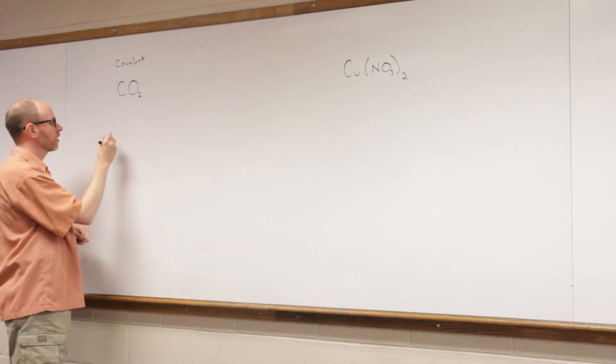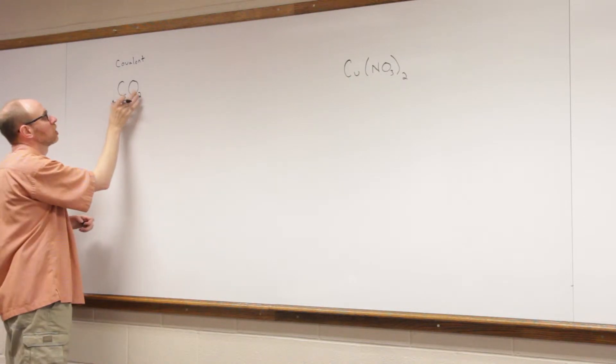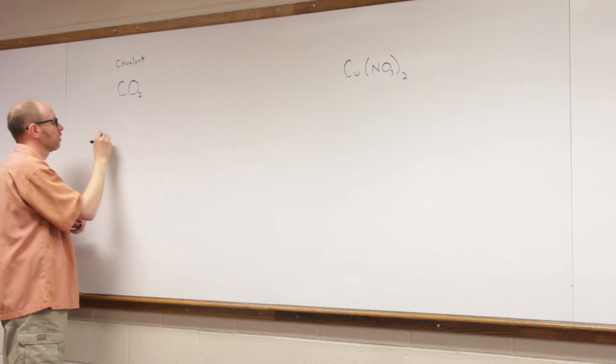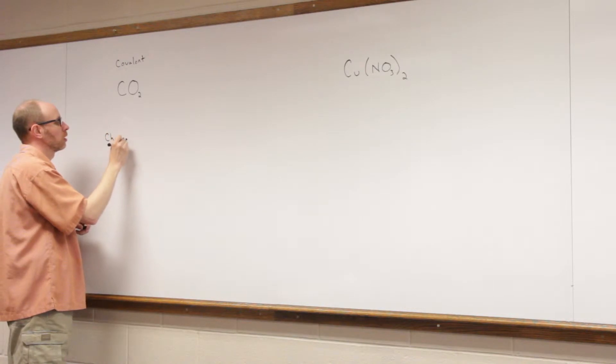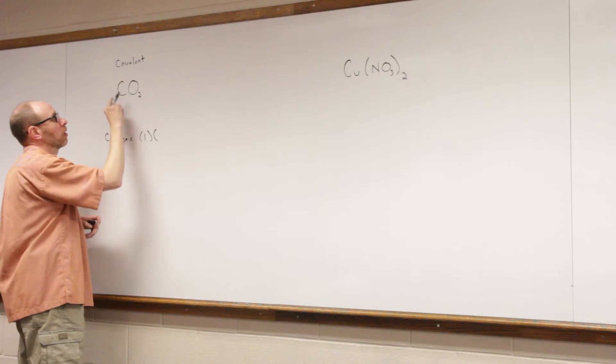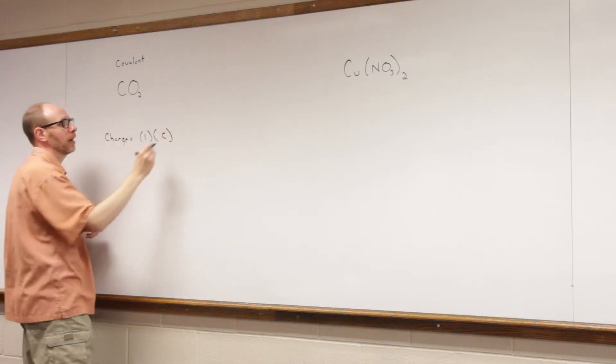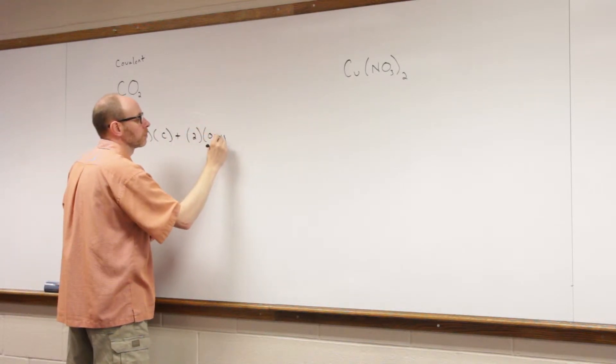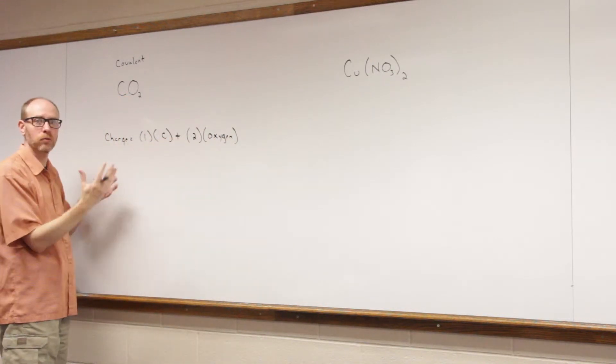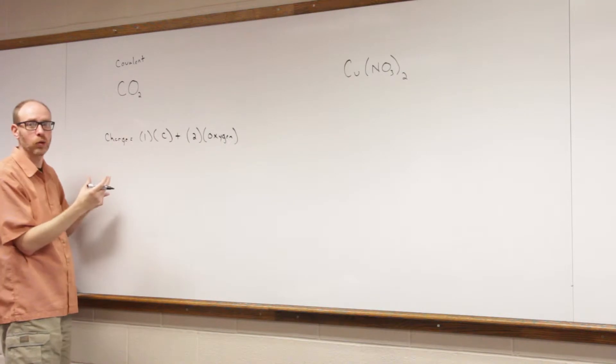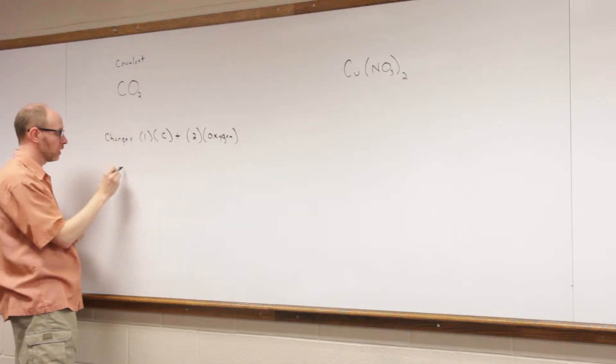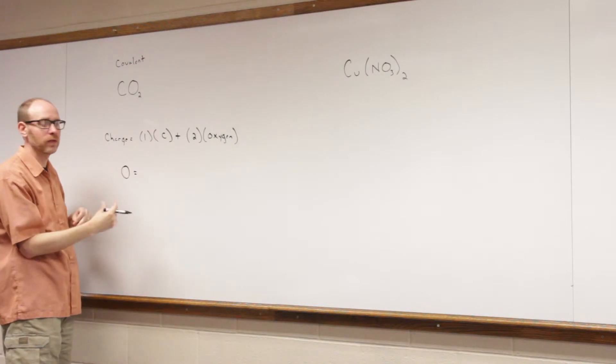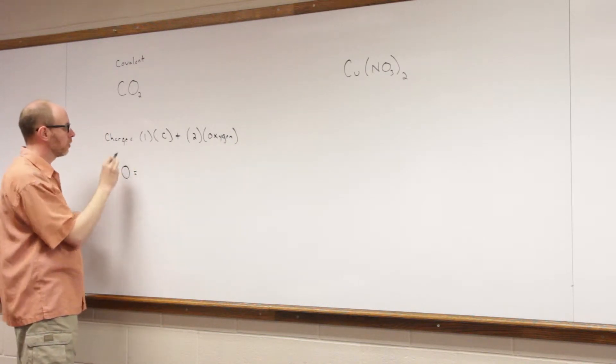So with carbon dioxide, we've talked about the idea in class that the charge of the compound equals the sum of all the oxidation numbers of all the atoms that are in that compound. So the charge is equal to one times whatever the oxidation number of carbon would be, because there's one carbon atom and there are two oxygen atoms. So the one carbon plus the two oxygen atoms, we take those oxidation numbers, add them together, that's to equal what the charge would be. In this compound, the charge is zero.